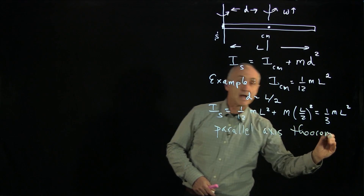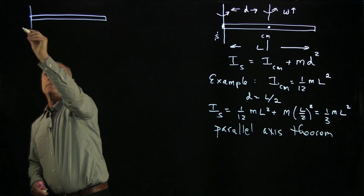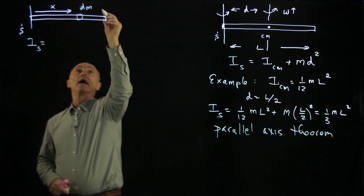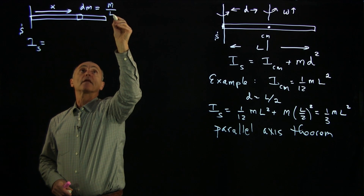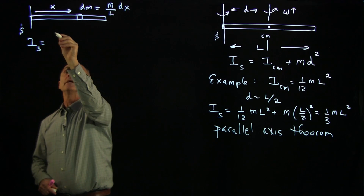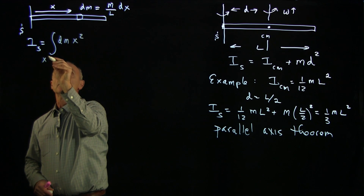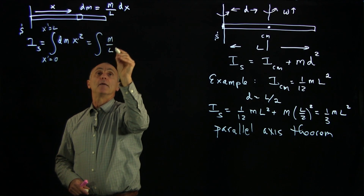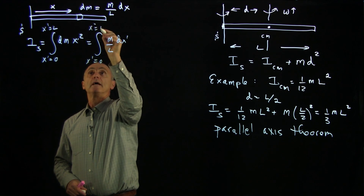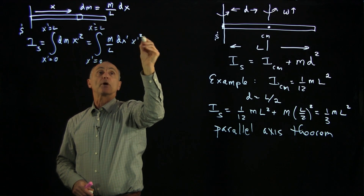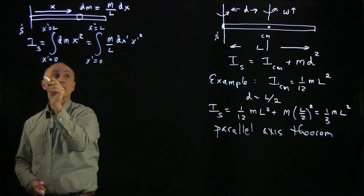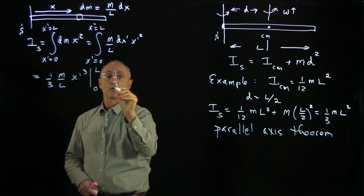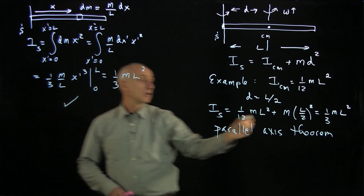Now as I said, we can calculate the moment about s directly. Just to show you very quickly: if we pick s at the end and pick a little dm at distance x, then the moment about s — letting dm equal the total mass divided by the length times a little distance dx — the moment is dm times x². With x prime going from 0 to L, we have the integral of (m/L) dx prime times x prime squared. This is just the integral of x prime cubed over 3, giving (1/3)(m/L) x prime cubed evaluated from 0 to L, which comes out to (1/3) m L². That's in agreement with the parallel axis theorem.